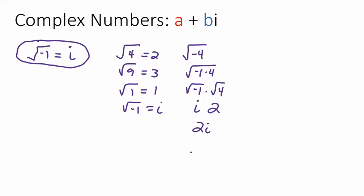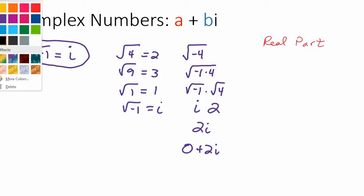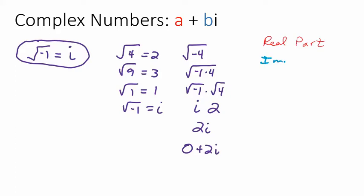What we have so far with 2i is just the imaginary part. Written as a complex number we'd say zero plus 2i. The a number is called the real part, and the b number is called the imaginary part of the complex number. So most complex numbers will look like 3 plus 2i or negative 1 plus 6i — the 3 is the real part and 2i is the imaginary part.